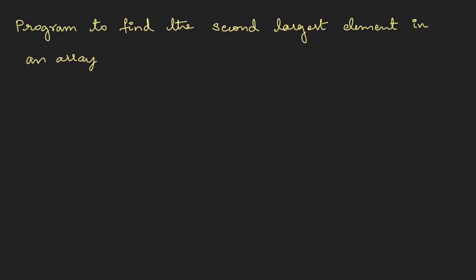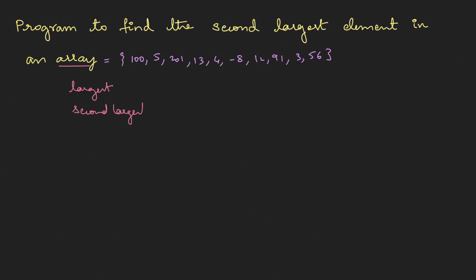Program to find the second largest element in the array. I'll take the array used in the last program. To get the second largest, we're going to use two variables: the first I'll call 'largest' and the second 'second_largest'. Both of these I'll assign to INT_MIN. Now let's go to the for loop: for i equals zero, i less than array size.